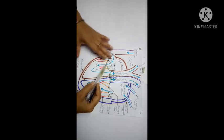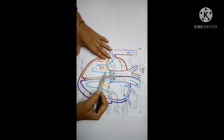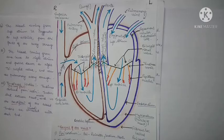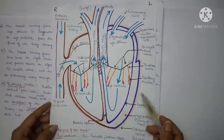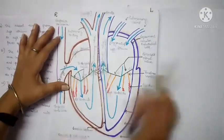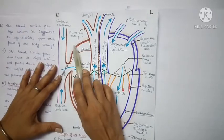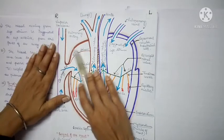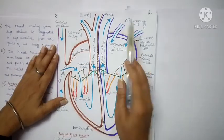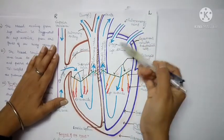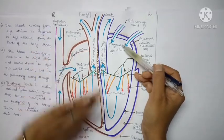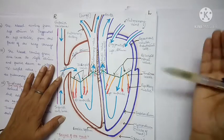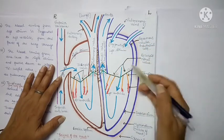So the tricuspid valve opens, and then blood passes through the pulmonary valve into the pulmonary artery. An important point here: an artery is a vessel that carries blood away from the heart, while a vein is a vessel that carries blood towards the heart.